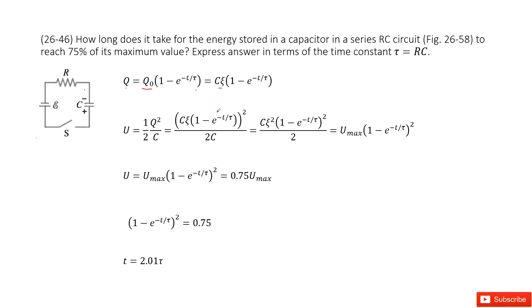And then we input Q inside. And simplified, we find one half C epsilon squared is just U max.